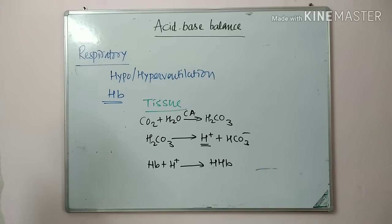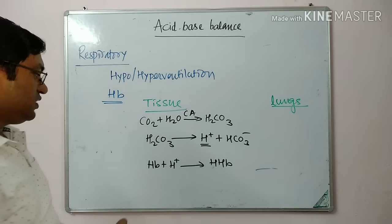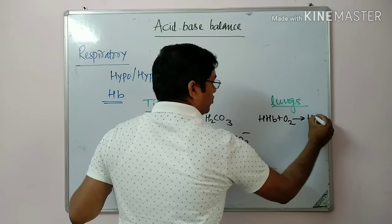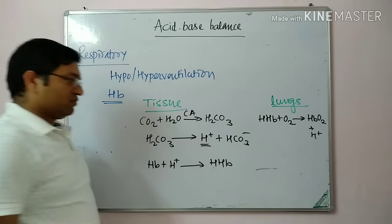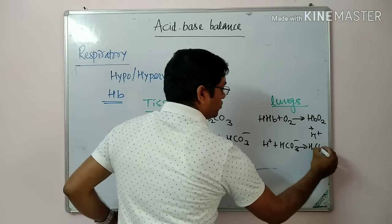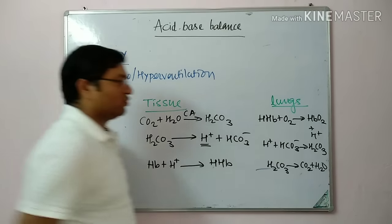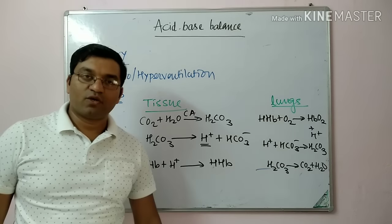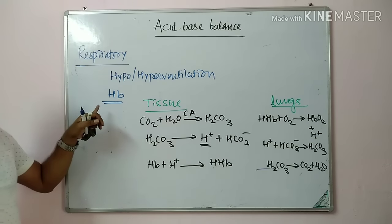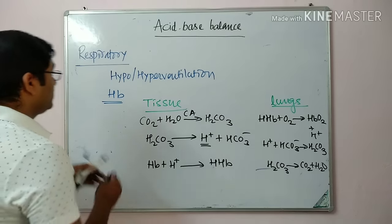At the lungs, where oxygen saturation is high, hemoglobin combines with O₂ to form HbO₂, releasing H⁺ ions. These H⁺ ions combine with bicarbonate to form H₂CO₃, which dissociates into CO₂ and water. This completes the two mechanisms by which the respiratory system regulates acid-base balance.